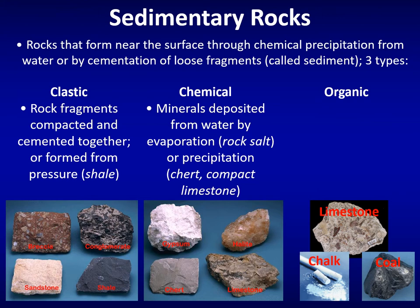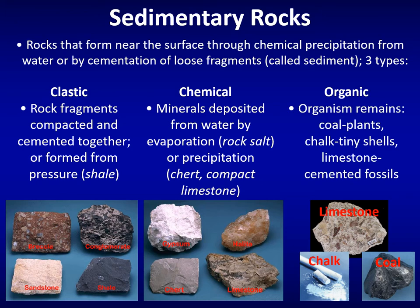Organic sedimentary rocks are made from organism remains. Coal, chalk, and limestone are all rocks made from once-living organisms. Coal forms from plants in ancient swamps, chalk from the tiny shells of marine organisms, and limestone from cemented fossils.